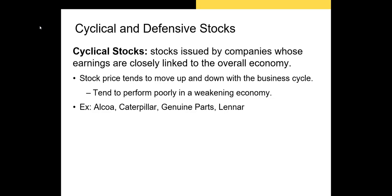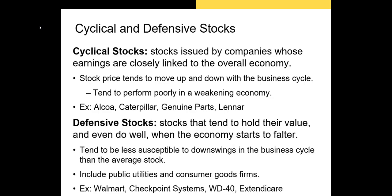If you're looking for one statistic to define cyclical stocks, you can look at whether the firm's beta is high. Defensive stocks are stocks that tend to hold their value and even do well when the economy starts to falter — they are somewhat the opposite of cyclical stocks. Most well-known defensive stocks are often utility providers and grocery stores like Walmart. During recessions, people still need electricity and groceries, so these stocks outperform other stocks during these periods. Defensive stocks often have betas of less than one.